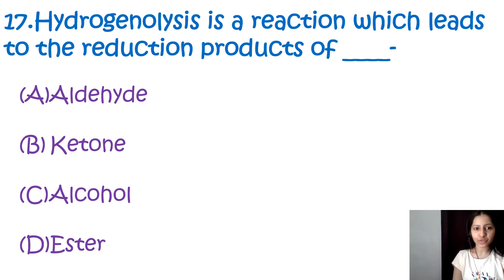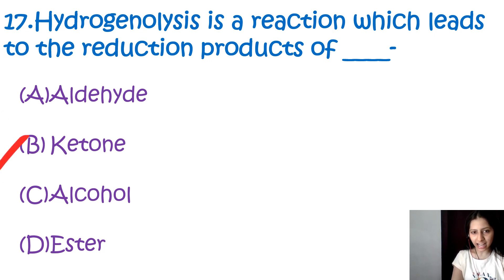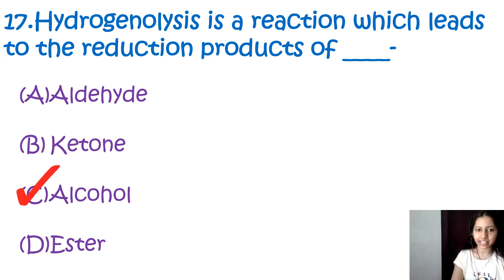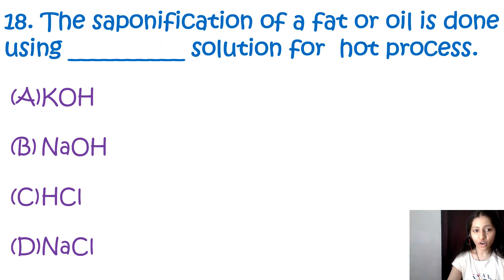Question number 17: Hydrogenolysis is a reaction which leads to the reduction products of — aldehydes, ketones, alcohols, or esters. The correct option is C, alcohol. Hydrogenolysis is a reaction which leads to the formation of glycerol, and the reduction product is alcohol.